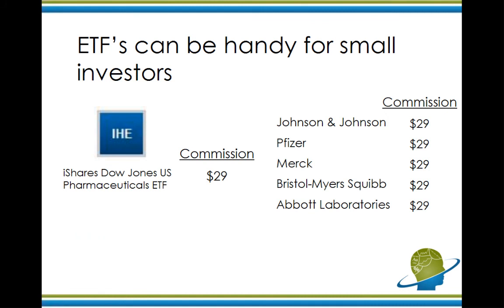ETFs can be really handy for small investors. For example, let's say you're going to buy some drug stocks and you're trading with a discount broker. You're going to buy Johnson & Johnson, Pfizer, Merck, Bristol Myers, Abbott. With a discount broker, you're going to have to pay $29 to buy each one — so that's about $145. Or you can buy the IHE, the iShares Dow Jones US Pharmaceuticals ETF — that ETF owns all of those stocks. If those stocks are going up, the ETF is going up, and you only have to pay one commission of $29.